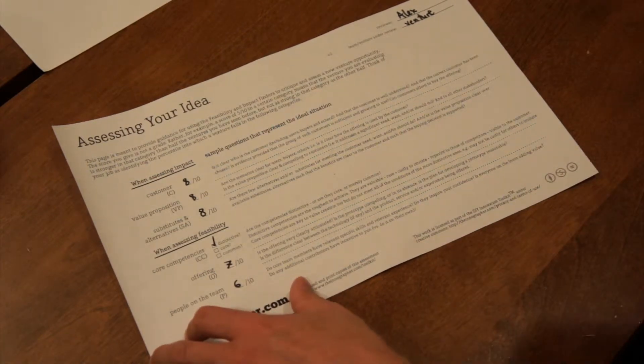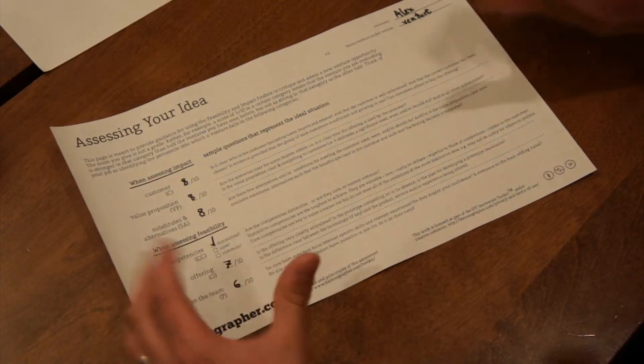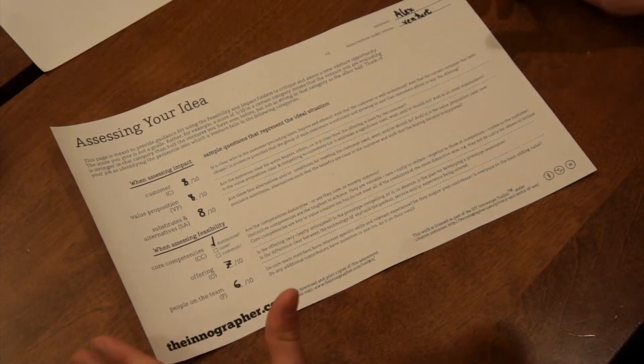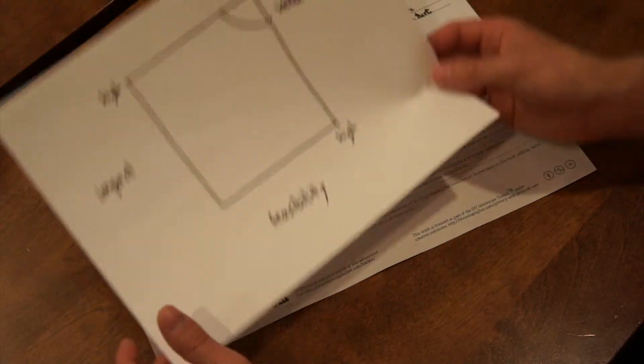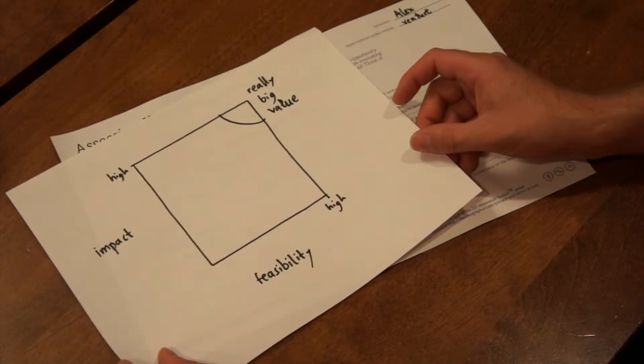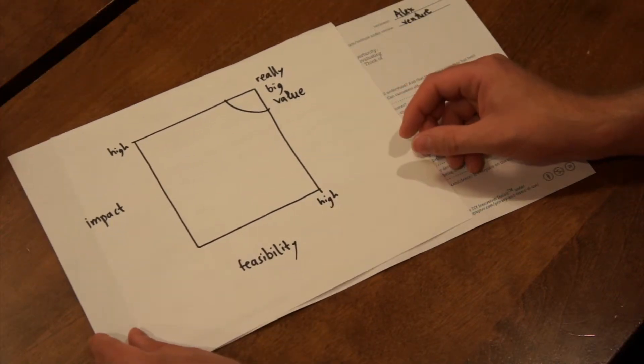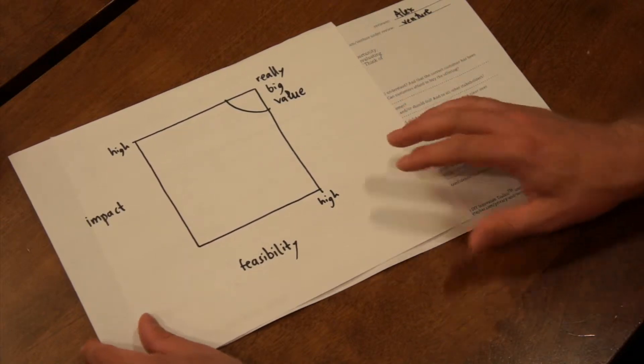So what they would then do is, with this feedback in hand that they may have gotten from you or from others, they would then want to know where they are on this impact and feasibility chart. And that's where the power of this comes in is being able to map that for themselves.